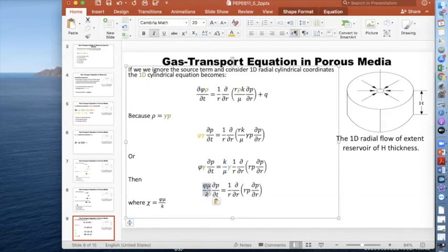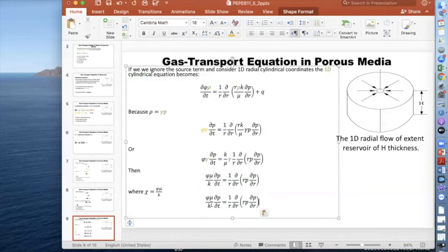We ignored q in our solution by considering it in the boundary condition, so q equals zero. Let's drop gamma and take k over mu to the left-hand side to become mu over k. Instead of writing three coefficients, we replace them with a new symbol called chi.